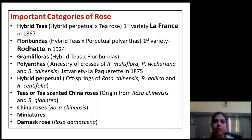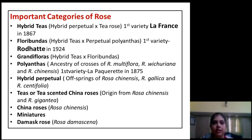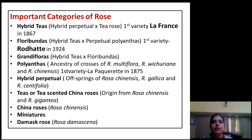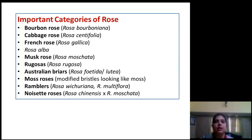The different categories of rose: the main categories include hybrid tea, which is the dominant category. The first hybrid tea variety was released in 1867 — that was La France — and it is a cross of hybrid perpetuous and tea roses. It is dominating all over the world; when you see a cut flower rose, it is nothing but a hybrid tea. Besides hybrid tea, the categories include floribundas, grandiflora, polyanthas, hybrid perpetuals, tea roses, china roses, miniatures, damask roses, bourbon roses, cabbage roses, french rose, musk rose, rubosa, and australian briar.